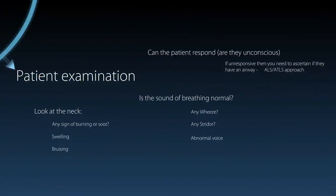When examining the patient for airway emergencies, first assess whether the patient can respond. If unresponsive, move into your ALS or BLS approach to check if they are breathing at all. If partly responsive, assess whether the sound of breathing is normal — look for wheeze, stridor, or an abnormal voice, which can indicate damage or swelling to the airway and risk of soon losing it. Also look at the neck for signs of burning or soot around the nasal passages, and any swelling or bruising around the neck.